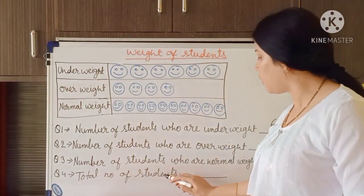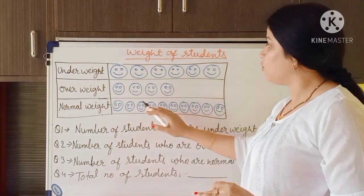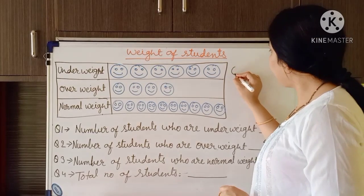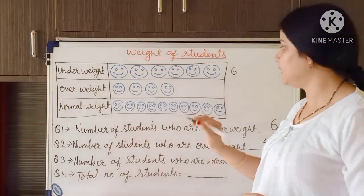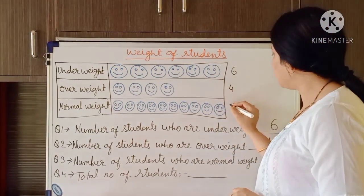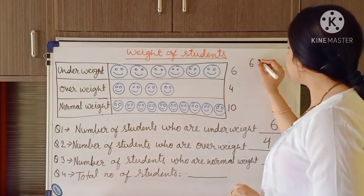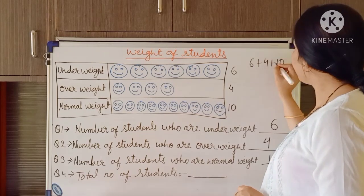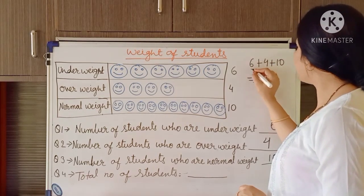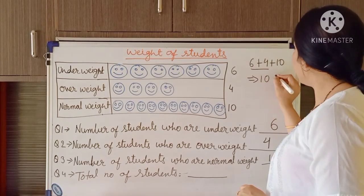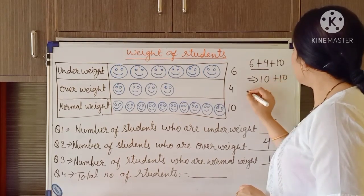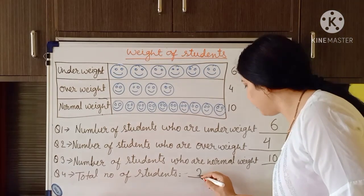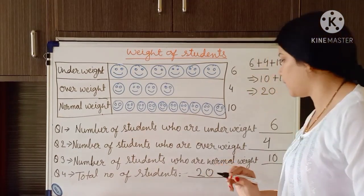The last question is the total number of students. We add 6 plus 4 plus 10: six plus four is ten, and ten plus ten is twenty. So the total number of students is twenty.